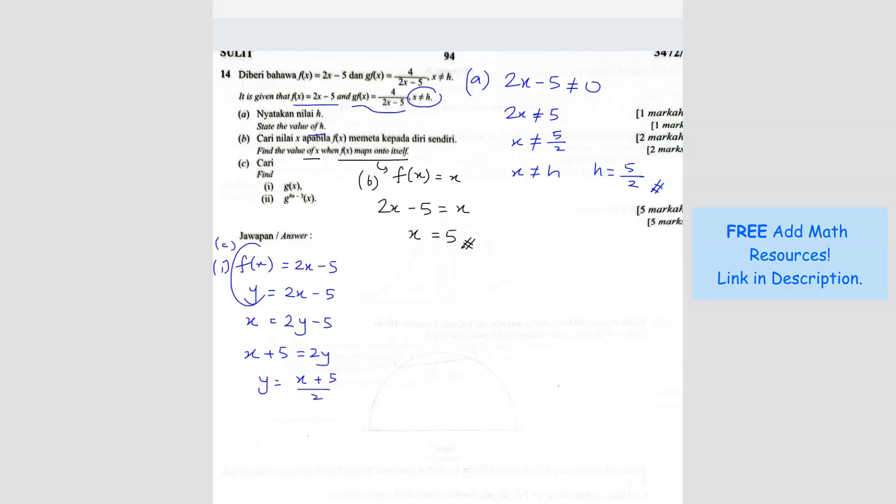and then y equals x plus 5 over 2. So this y now is no longer equals to f(x), the y now is actually f inverse, because I already swapped places. So x plus 5 over 2. Okay, so this is the f inverse.